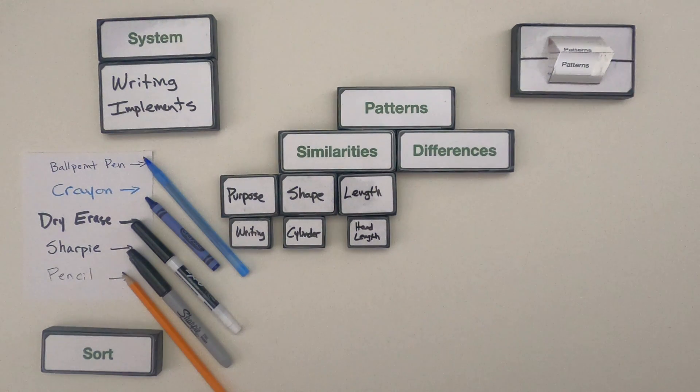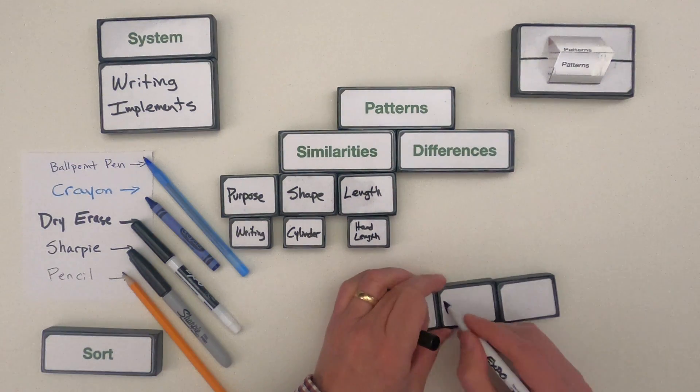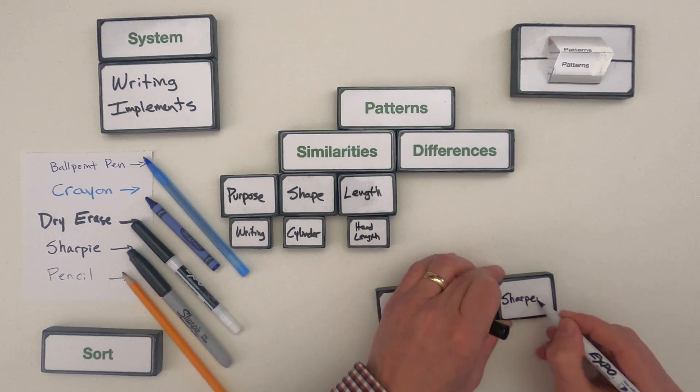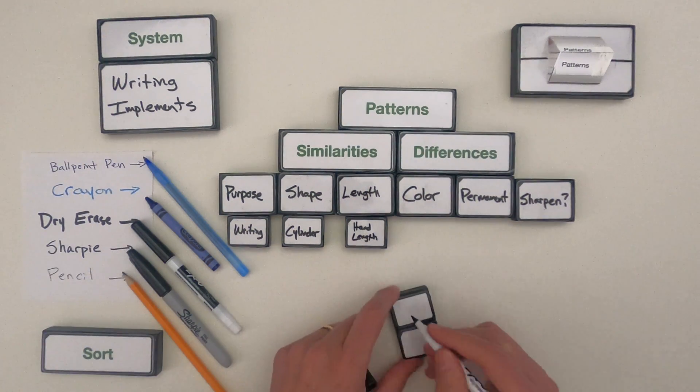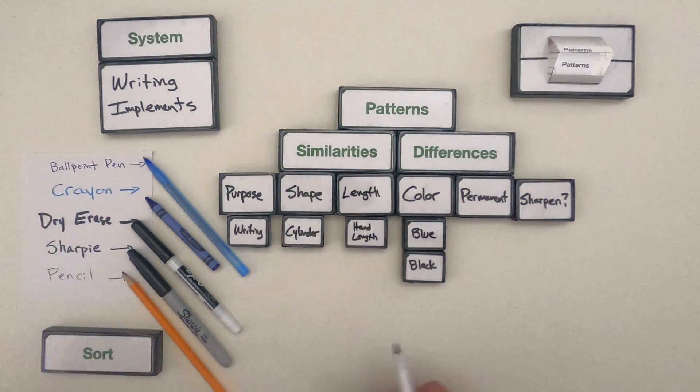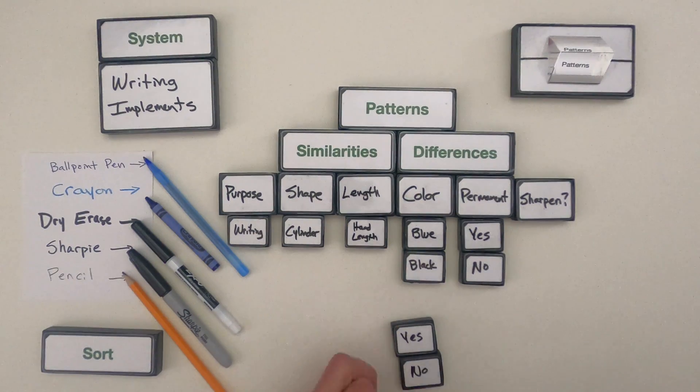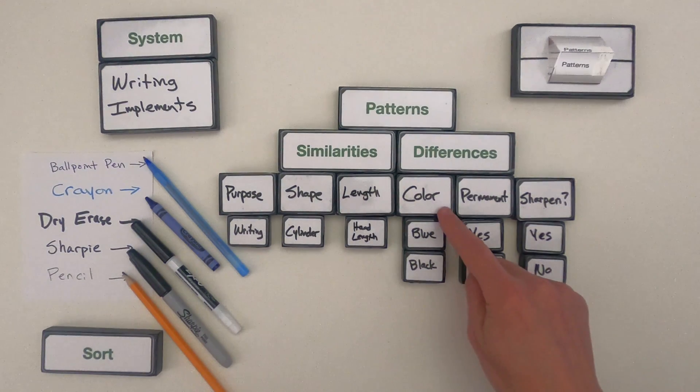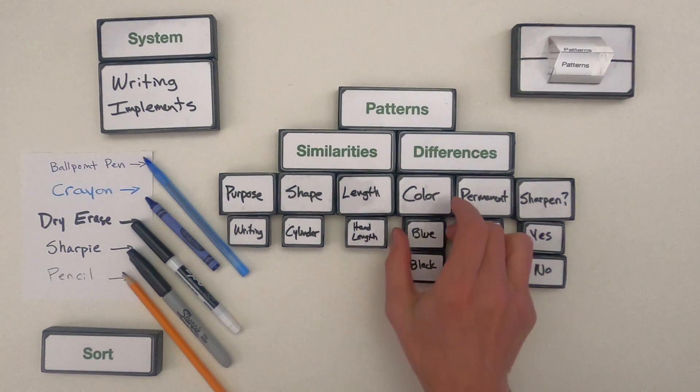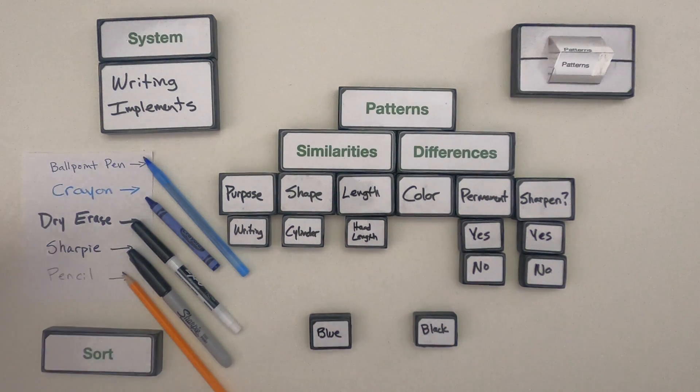Next, let me show you what I think the differences are. Okay, so some of the differences I noticed, patterns I noticed, was the color. There's blue versus black. And so I could sort these writing implements into those that are blue and those that are black. Those that are blue are going to be the ballpoint pen. Those that are black are going to be everything down below.